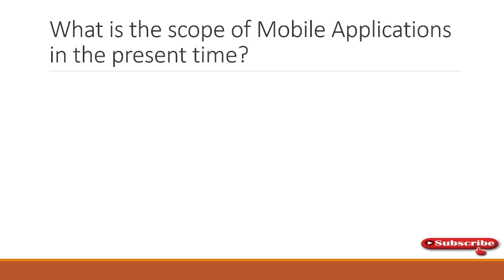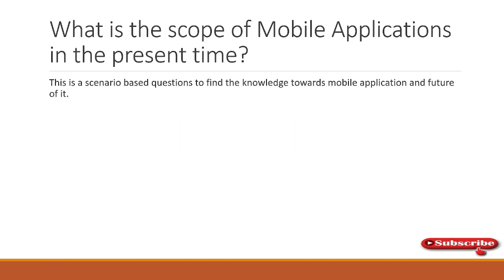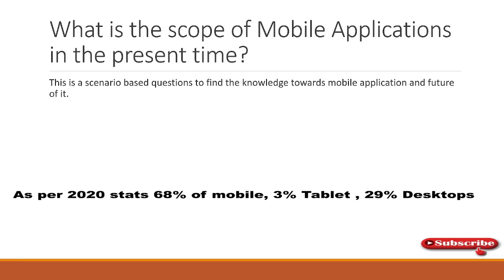What is the scope of mobile applications in the present time? This is a scenario-based and experience-based question. You need to know the current landscape: over 90% of users use mobile for daily usage, payments, bank transactions, watching TV and movies. In future, mobiles will likely take over around 95% of computing activity — even coding is being done from mobile now.